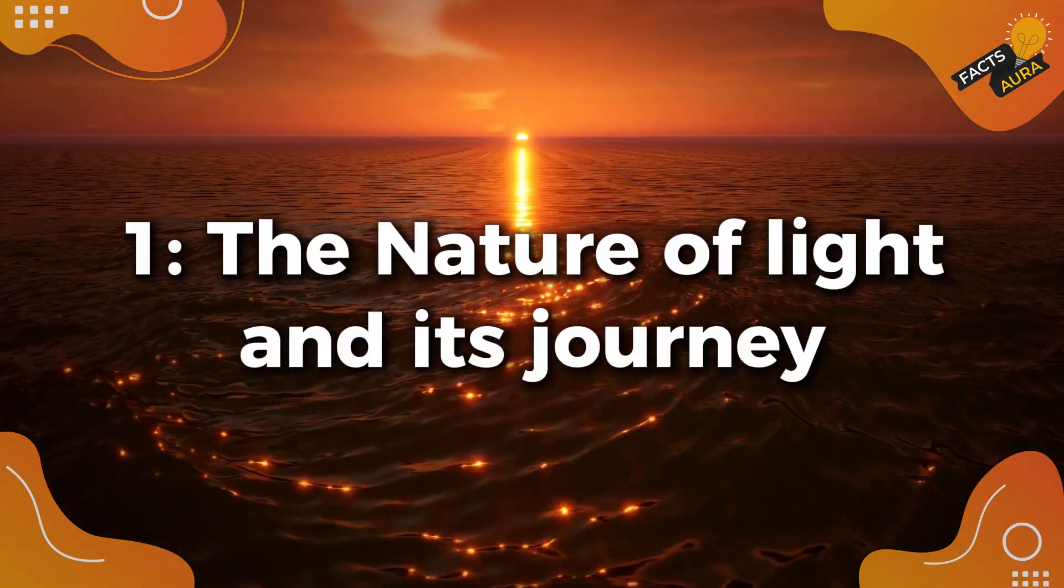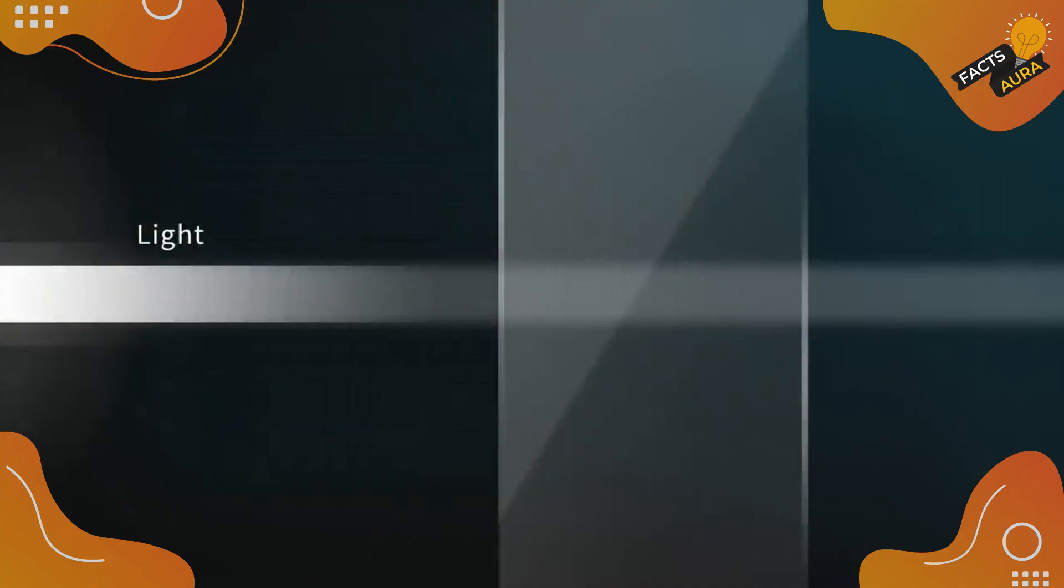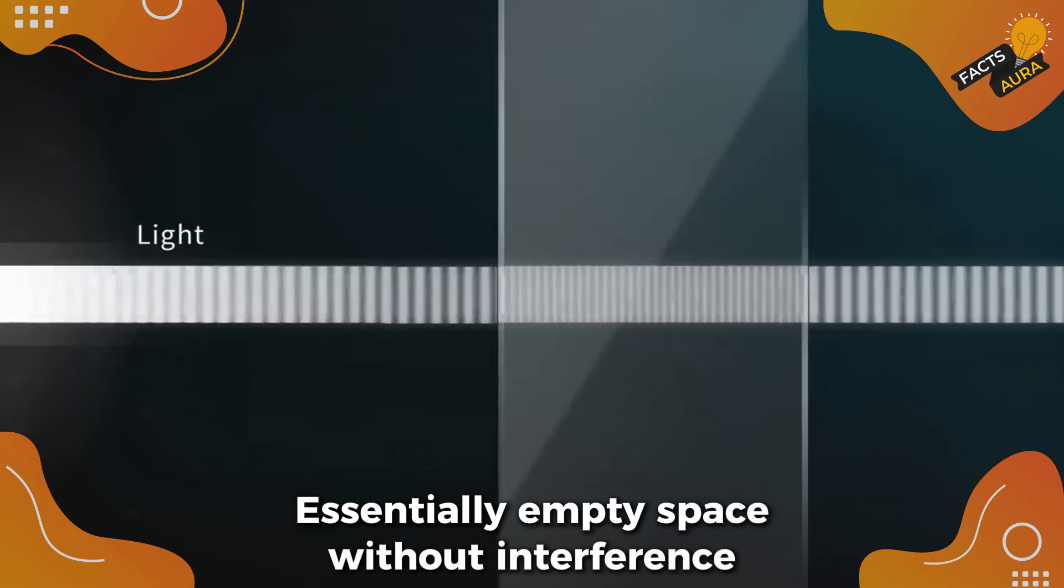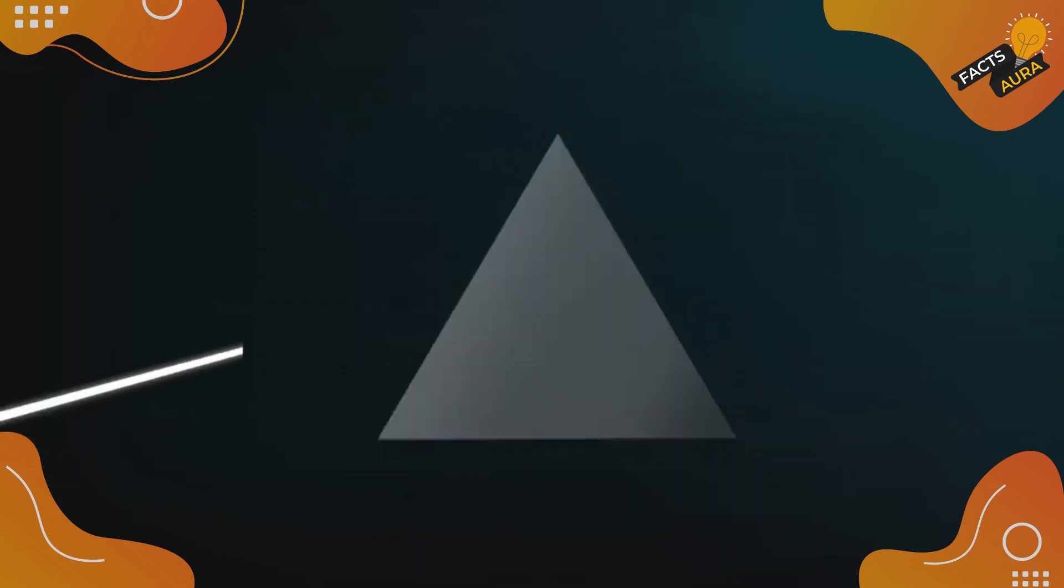The nature of light and its journey. To truly appreciate the challenge of measuring light, let's look at its nature. When we measure the speed of light, we're actually measuring how fast it travels in a vacuum—essentially, empty space without interference. But is this speed consistent, or could it vary?